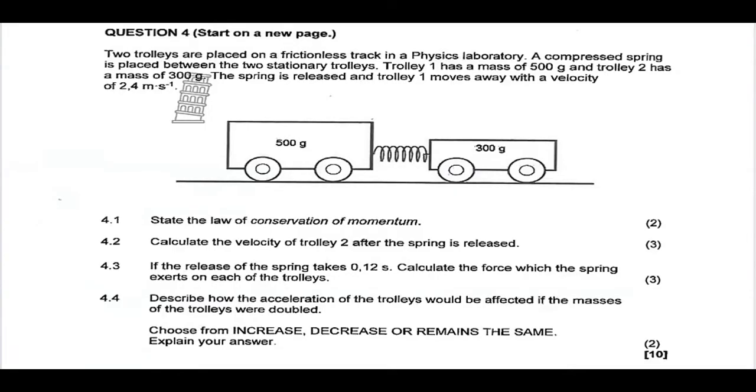Question 4. Two trolleys are placed on a frictionless track in a physics laboratory. A compressed spring is placed between the two stationary trolleys. Trolley 1 has a mass of 500 grams, and trolley 2 has a mass of 300 grams. The spring is released and trolley 1 moves away with a velocity of 2.4 meters per second.